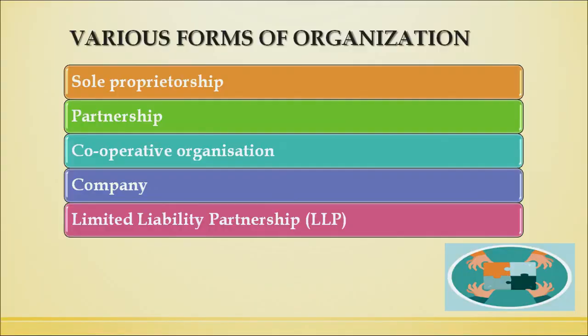Hello Learners, welcome to N.I.O.S. In this session, we are going to learn various forms of business organization, their merits, demerits and features. There are total five forms of business organization. The first form is sole proprietorship, second partnership, third cooperative organizations, fourth company and the fifth form is limited liability partnership.